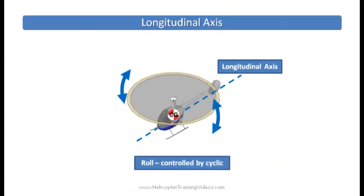Let's have a look at the longitudinal axis. That runs horizontally from front to back or back to front through the aircraft, again through the center of gravity. The longitudinal axis allows us to roll left and right on that axis, and that rolling motion is controlled by the cyclic.